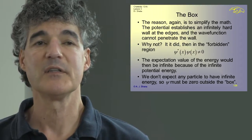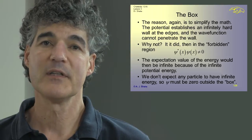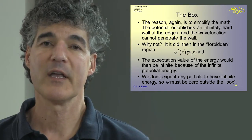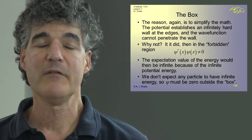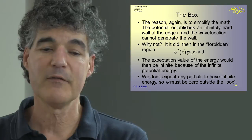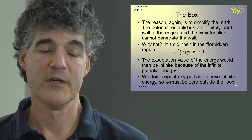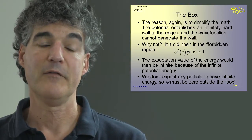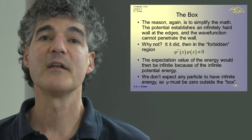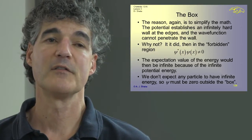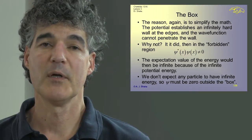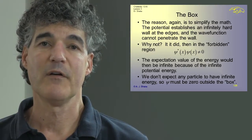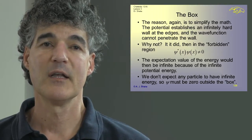What that amounts to is that the particle can't penetrate the edge of the box at all. Even though it's a wave, it cannot get in. Why does the wave function have to vanish outside the box? Because psi-star psi tells us the probability that the particle's there, and if that's non-zero and we multiply by V equals infinity, we get an infinite energy. If the energy of the particle is not infinite, we can't have any probability outside the box.